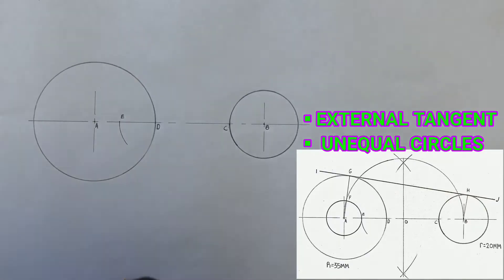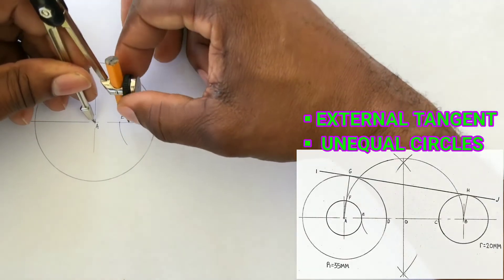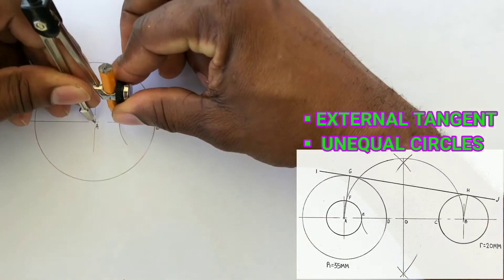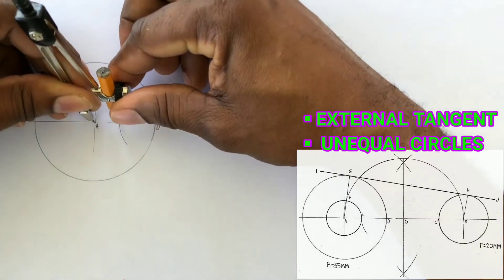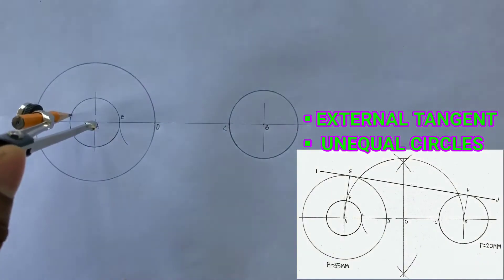We will now open our compass from A to E and using A as center and radius AE we will now draw a small circle.